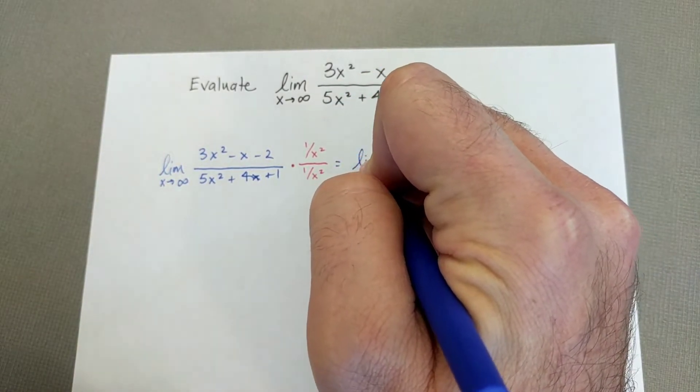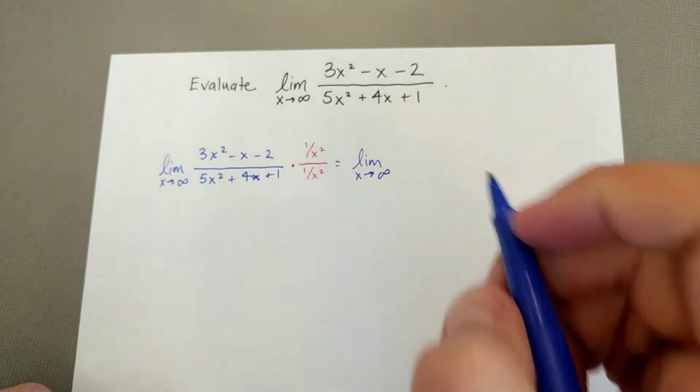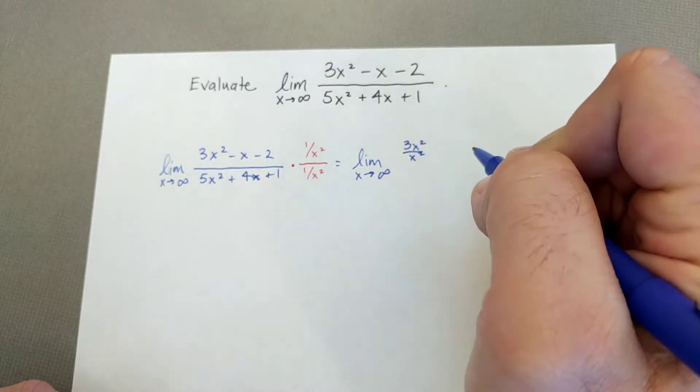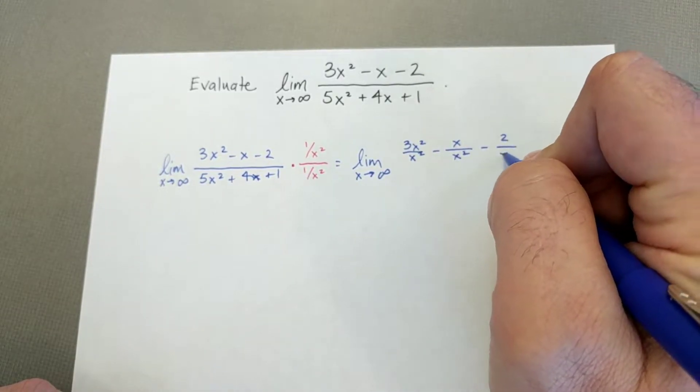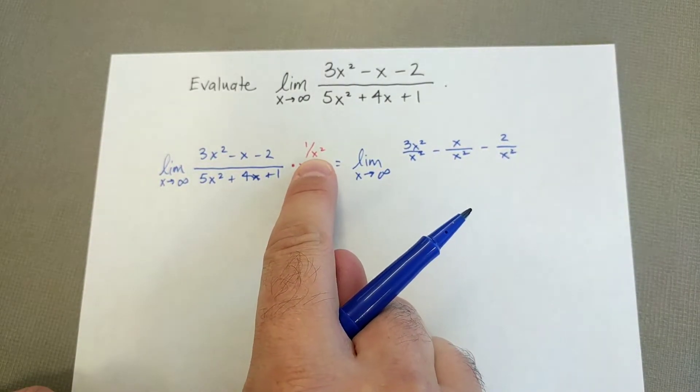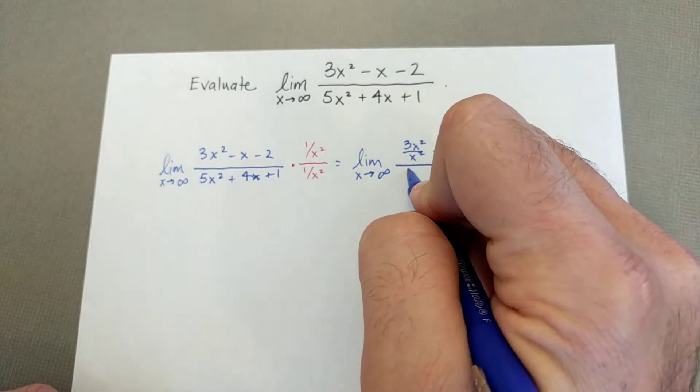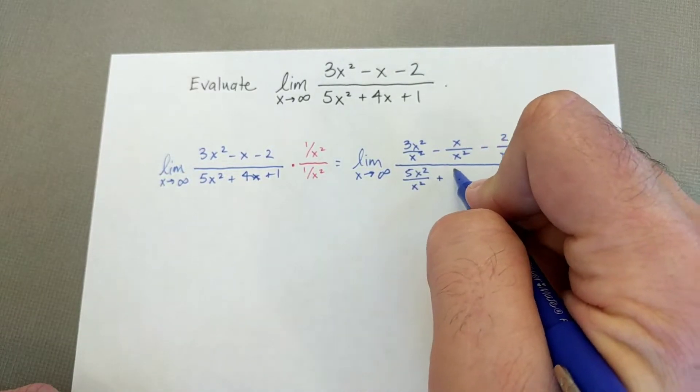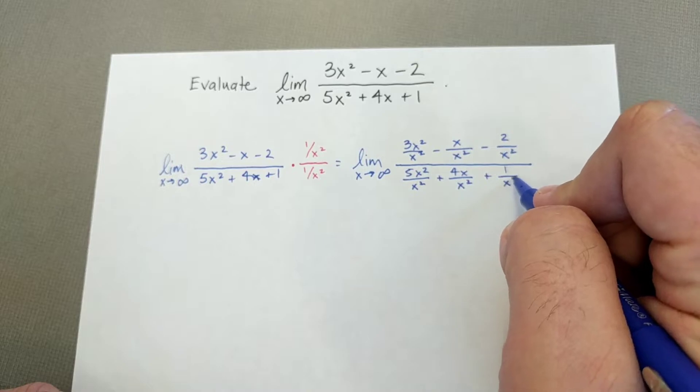So now I'm interested in what is the limit as x approaches infinity of 3x squared over x squared minus x over x squared minus 2 over x squared. So I distributed that division of x squared to each term in the numerator. And then now I'm going to do the same thing in the denominator. So 5x squared over x squared plus 4x over x squared plus 1 over x squared.